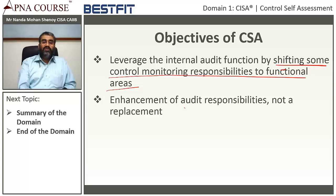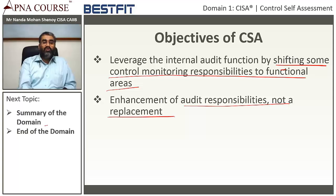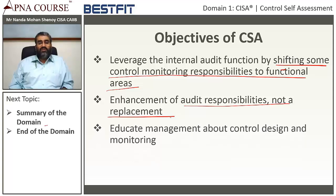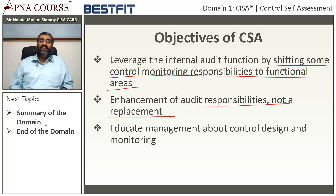Shifting some control monitoring responsibilities to a functional area is an enhancement of audit responsibilities, not a replacement. With limited resources in audit departments, you can also make departmental heads undertake some amount of control monitoring responsibilities. The objective is that people become self-aware, the department becomes more responsible, and they undertake control self-assessment in a routine manner.